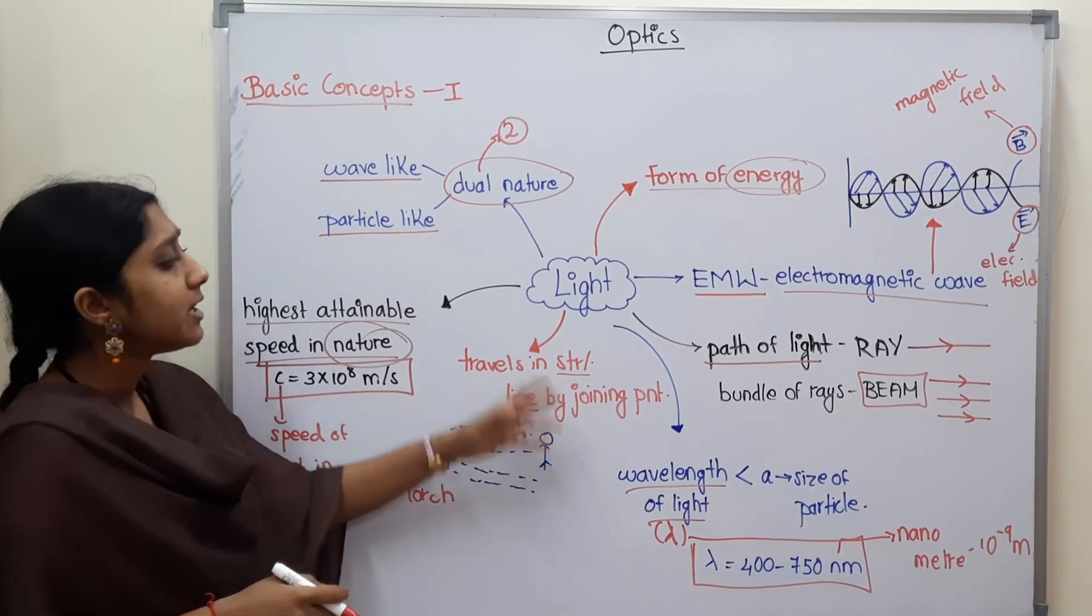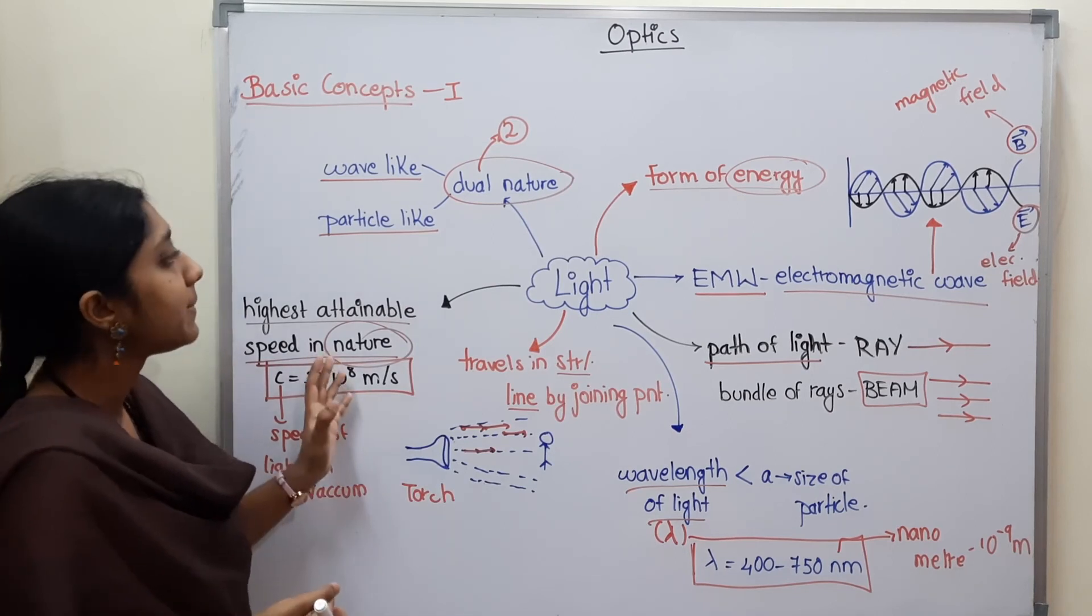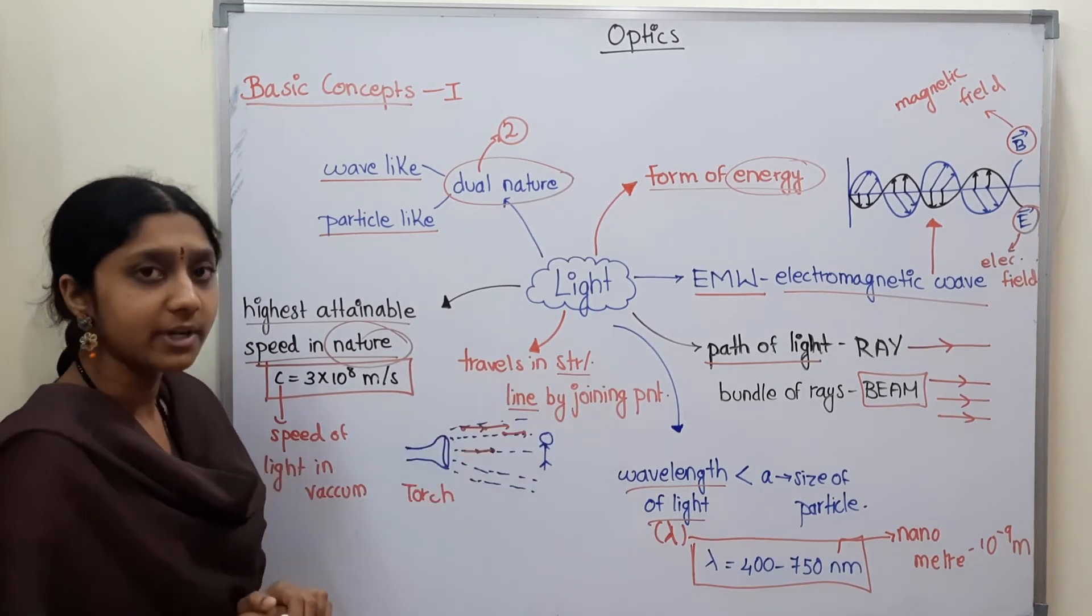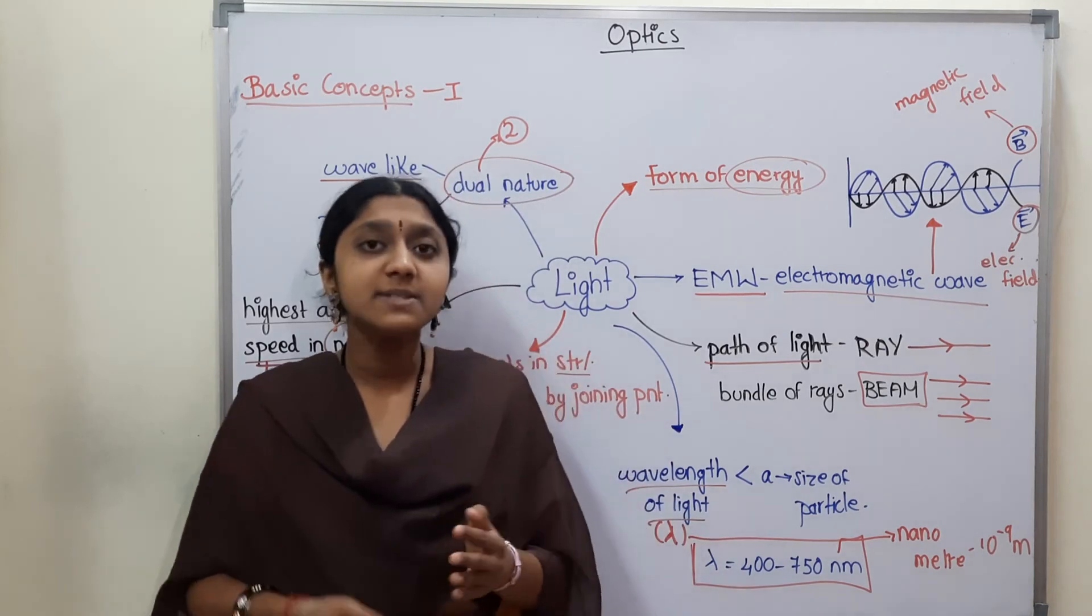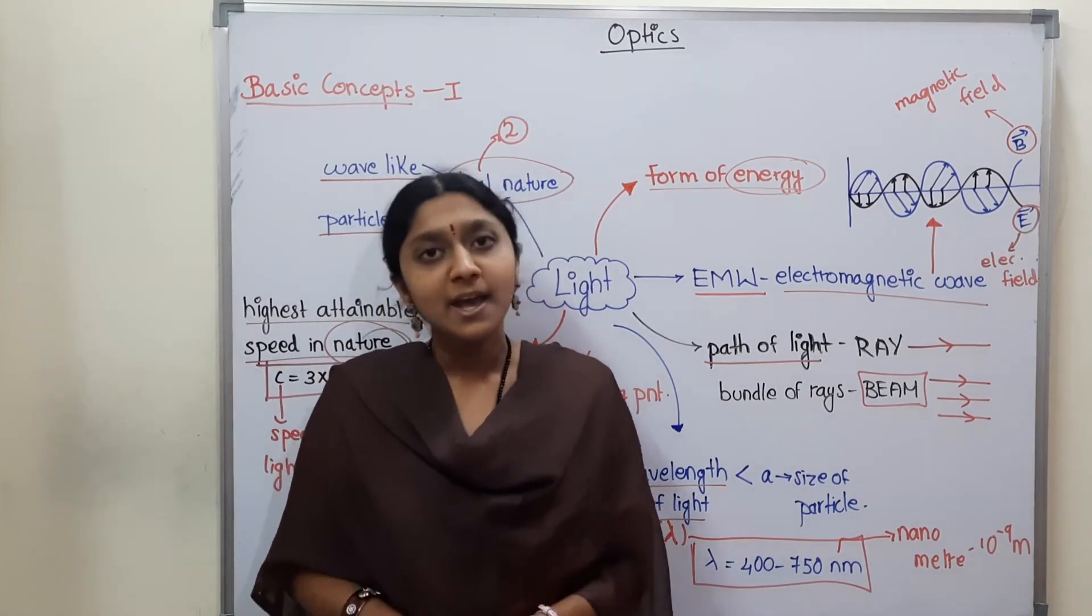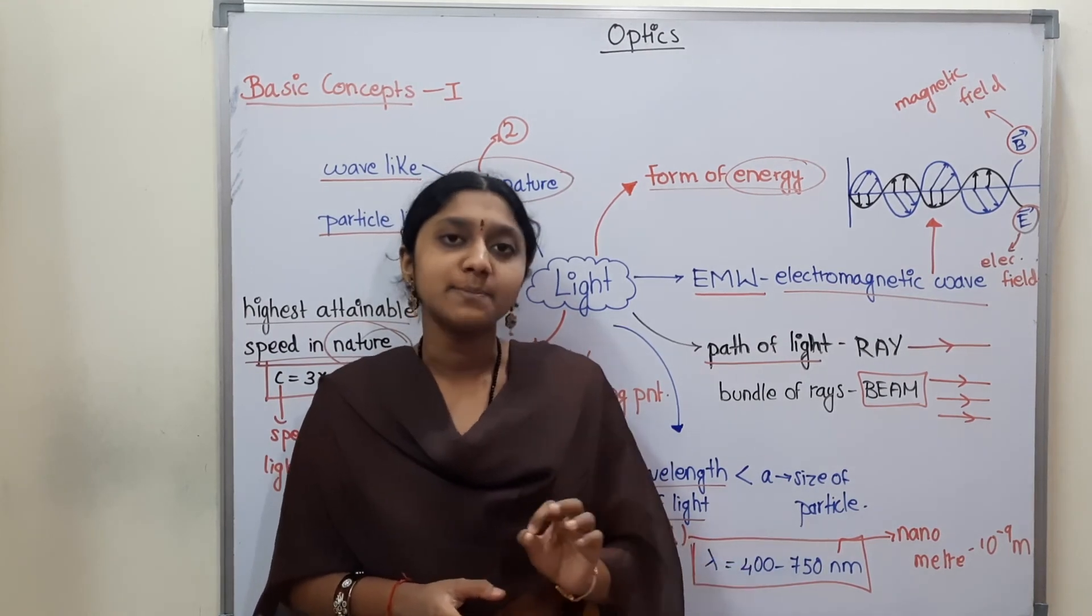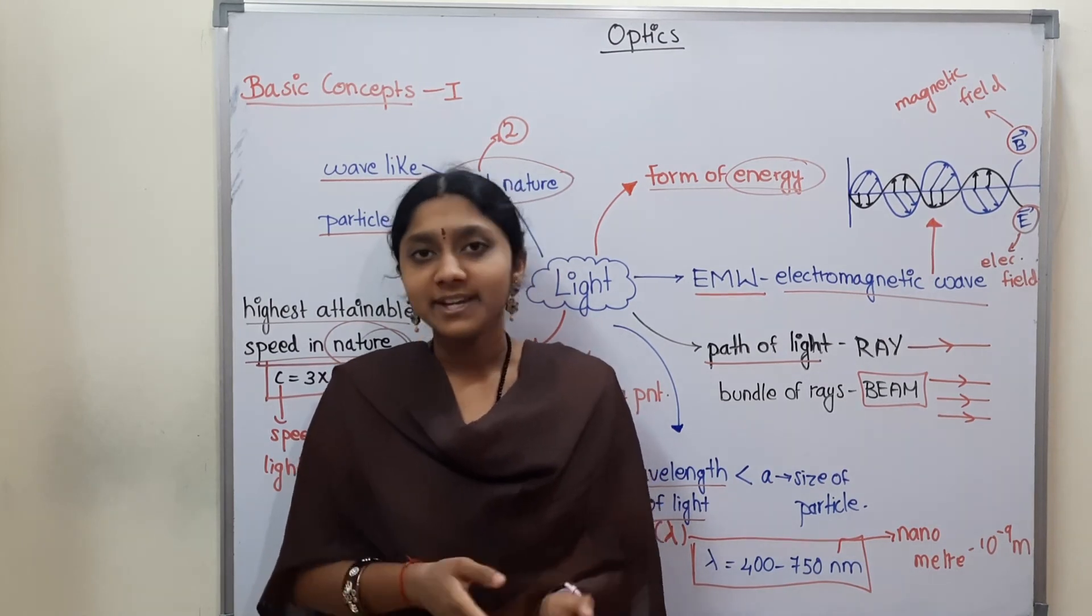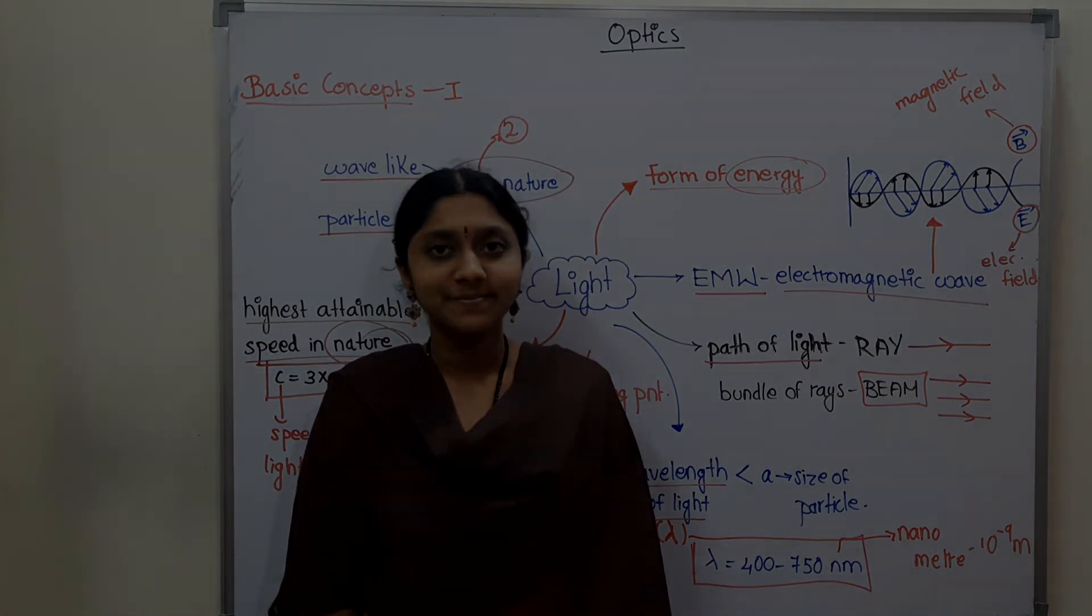So this is some of the important points regarding the light. So what we have to do about basic concepts part 1 - what is light and some of the important concepts. Next we will see the basic concepts part 2 - spherical mirrors and spherical lenses. That's why we will subscribe to our channel and press the bell icon. So we will see you in the next video.